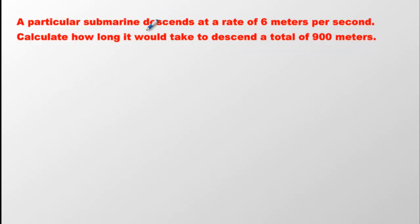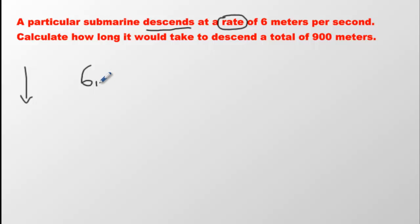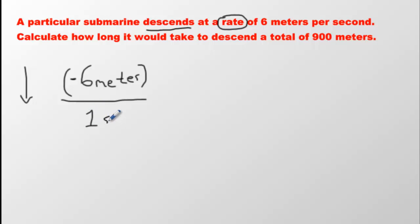We have a submarine. Submarines are descending, so it's going down — probably negative numbers. It's going down six meters per second. Since we've done rates, we can write it as negative six meters over one second. That's what six meters per second means. Is that a positive or negative time? Positive time — all time is positive.